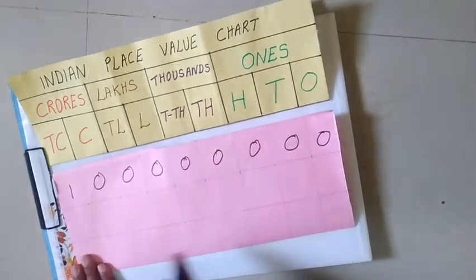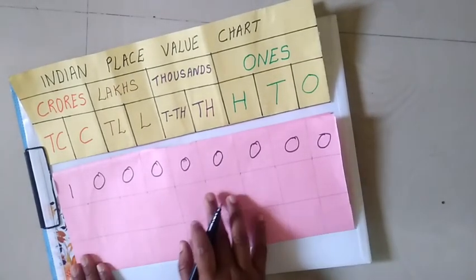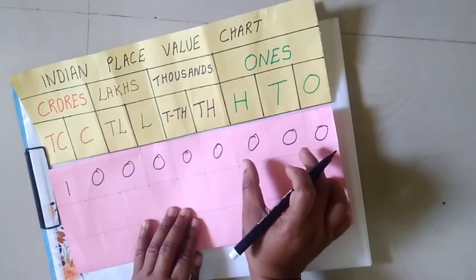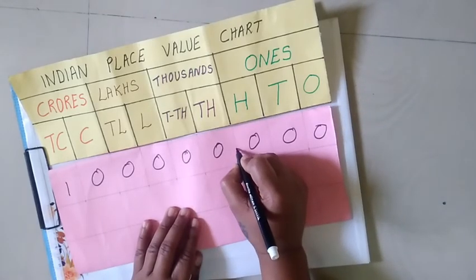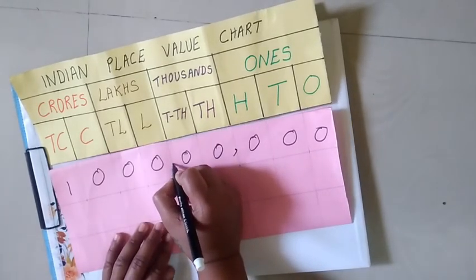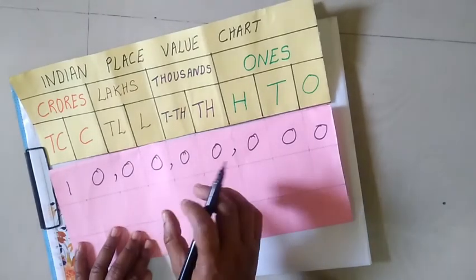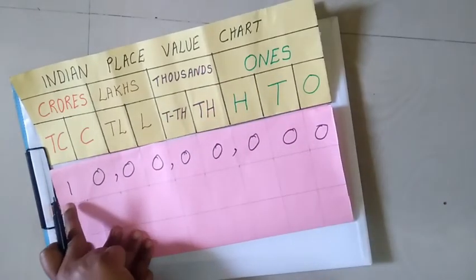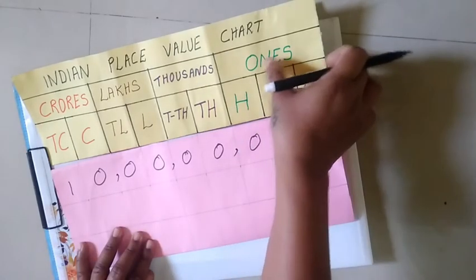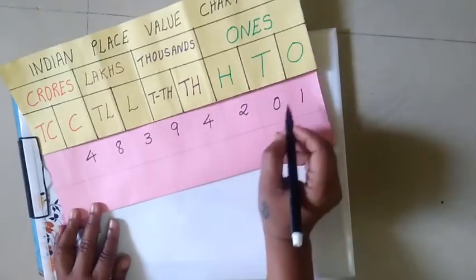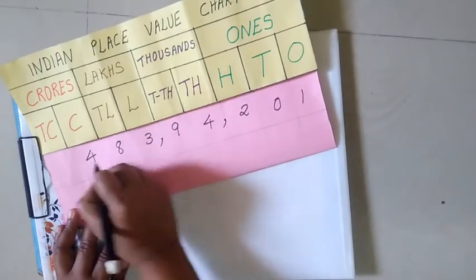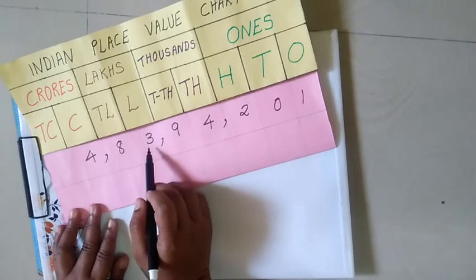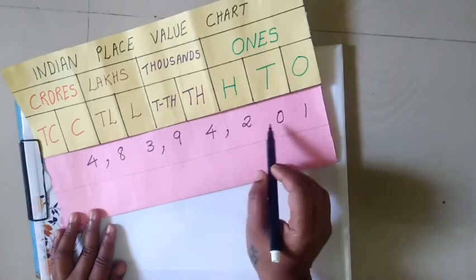Take an example. We have the number 1 followed by eight zeros. In the Indian place value chart, we put the comma after three digits from the right, then after two digits, and then after another two digits. We read this number as 10 crores. Let's take another example: putting commas after three digits, then two digits, then two digits, we read the number as 4 crores, 83 lakhs, 94,201.